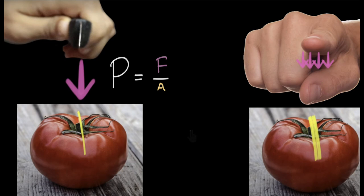So that means the tomato experiences a large pressure. But because your finger is not so sharp, the base area of a finger is so wide, at least compared to the knife, that entire force gets divided over a larger area.